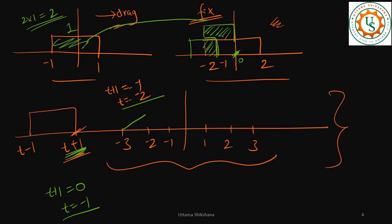At t = −1, the smaller pulse exactly overlaps within the larger one, so the maximum value is 2. From the start up to t = −1 there's a ramp going up, and symmetrically from t = 1 onward there's a ramp going down. In the middle region [−1, 1], there's always full overlap, giving a flat top — so the result is a trapezoidal pulse.